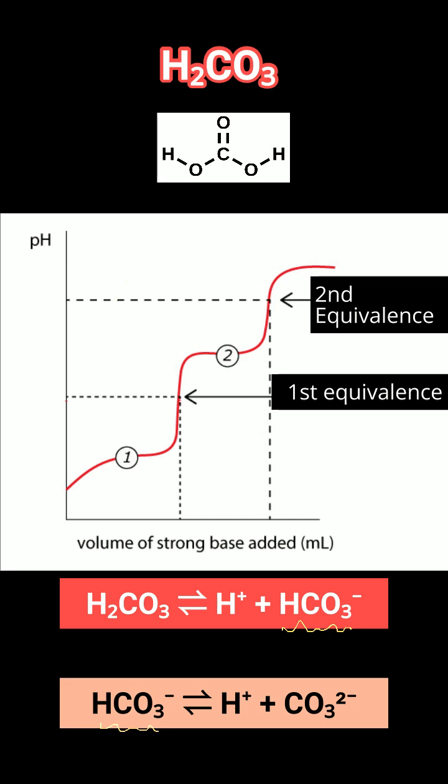In summary, each buffer region is centered around a pKa. That means at the half-equivalence point, pH equals pKa. The acid gets less acidic with each proton removed, so pKa values increase successively.